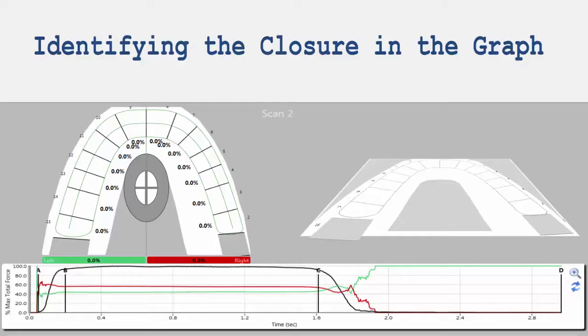To evaluate a patient's bite during closure, you first need to identify the key areas to observe. The closure is located on the graph at the initial rise of the black force line and ends when the black line nears its peak.